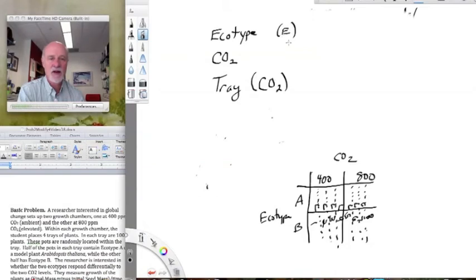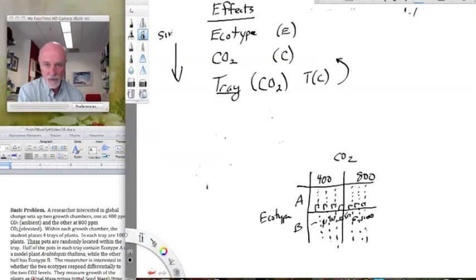So we write it like that. And I'm going to give these shorthand. I'm going to call ecotype E, CO2 C, and tray T within C. Now, as we are listing effects, that's what we're doing now. We're listing effects in our model that we want to set up in JMP. We need to consider them pairwise. So ecotype cross CO2. And by the way, typically we will put the nested effect right below the effect within which it is nested. And that's on purpose. So we put that right below CO2 tray because it's nested within CO2.